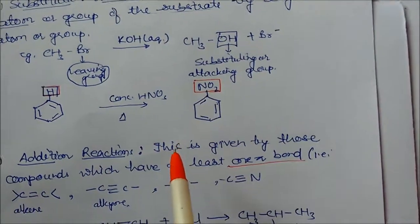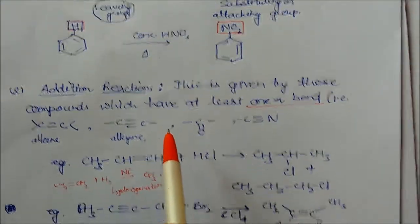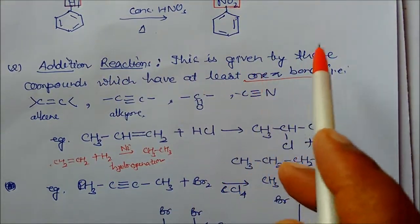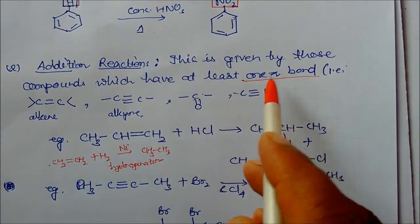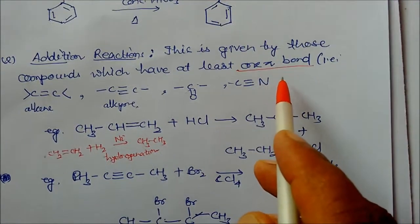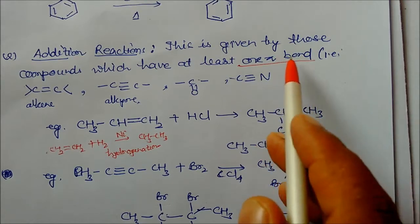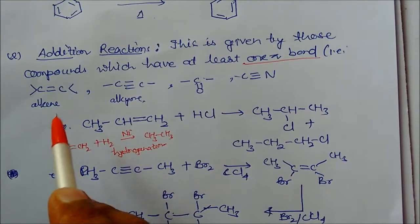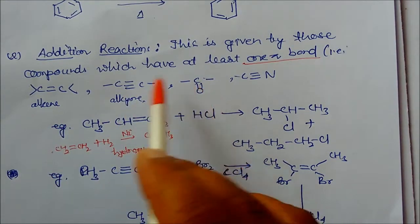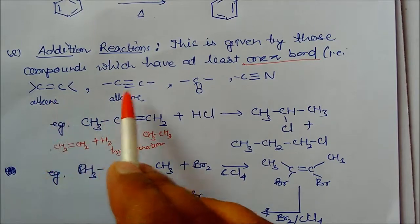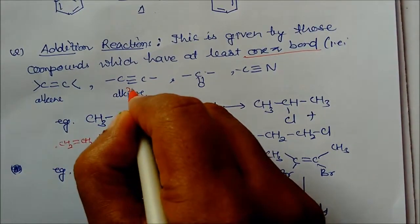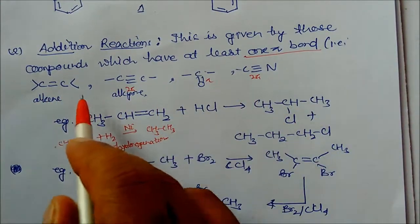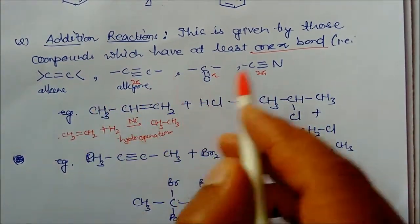This reaction occurs in organic reactions, not in inorganic reactions. The next reaction is addition reaction. This reaction is given by compounds which have at least one pi bond. A pi bond is the bond between two atoms which have more than a single bond — meaning double bonds or triple bonds, like in C=C or C≡C. So in compounds where pi bonds are present, addition reactions will take place.